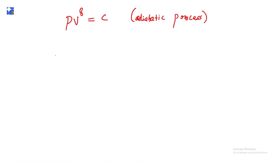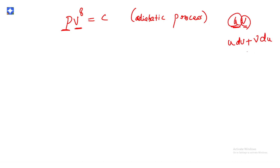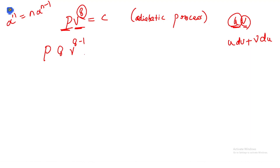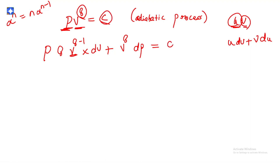We differentiate both sides using the product rule. Keeping P constant and differentiating V^γ gives γ·V^(γ−1)·dV. Then keeping V^γ constant and differentiating P gives dP. So the differentiated equation is: P·γ·V^(γ−1)·dV + V^γ·dP = 0.